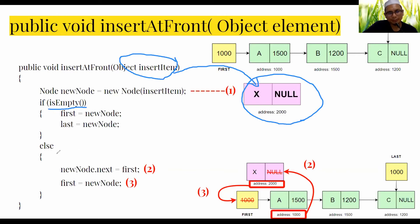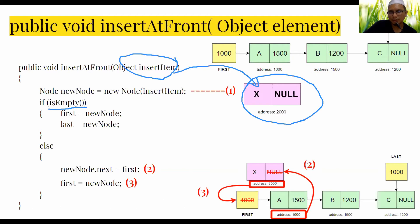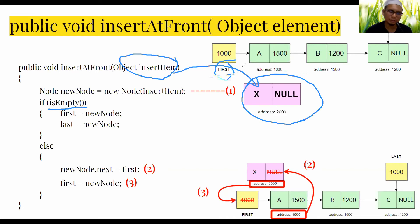For example, the list has three nodes A, B, C at addresses 1000, 1500, and 1200. The first data member points to the first node, and last points to the last node. In the LinkedList class we use three data members: first, last, and current, but in this method we only use first and last.